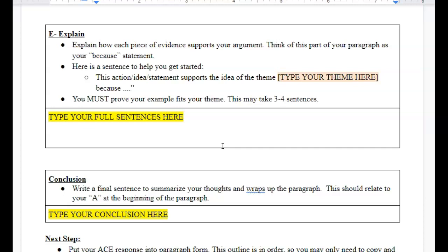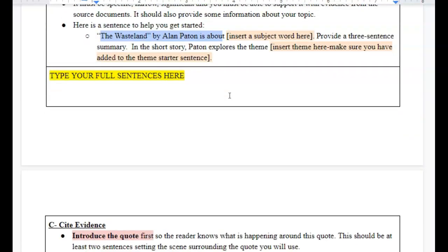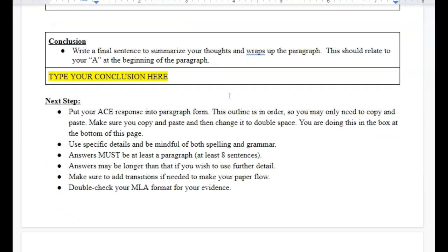Finally, you're going to conclude. You're going to write a final sentence to summarize your thoughts. Wrap up the paragraph. It should relate back to your A from the beginning of the paragraph. After you have all of these boxes filled in - your A, C, E, and your conclusion sentence -